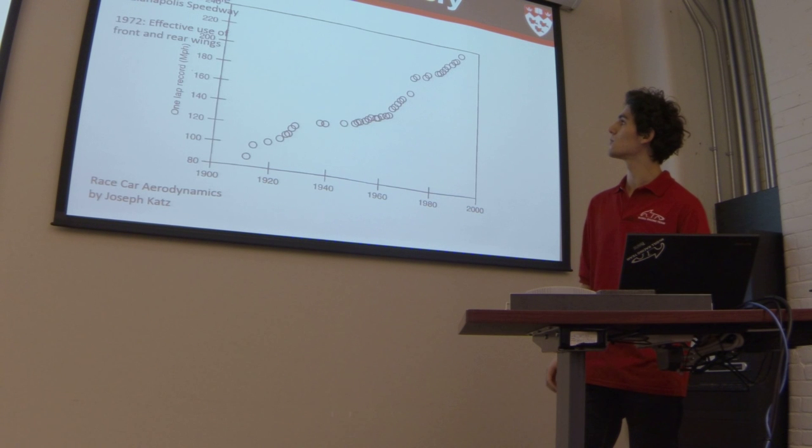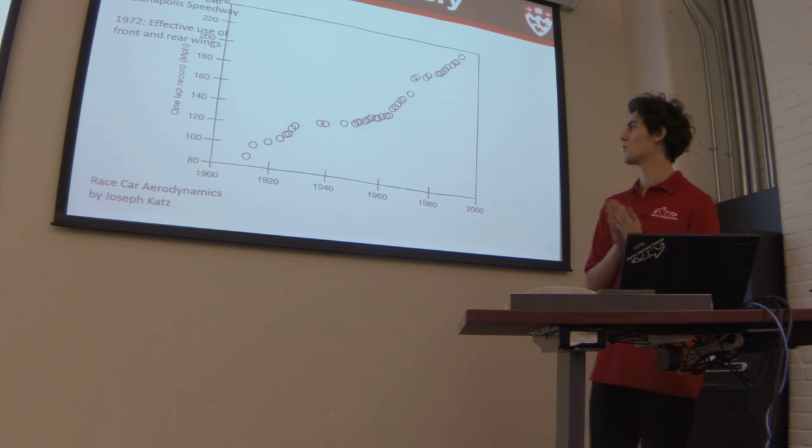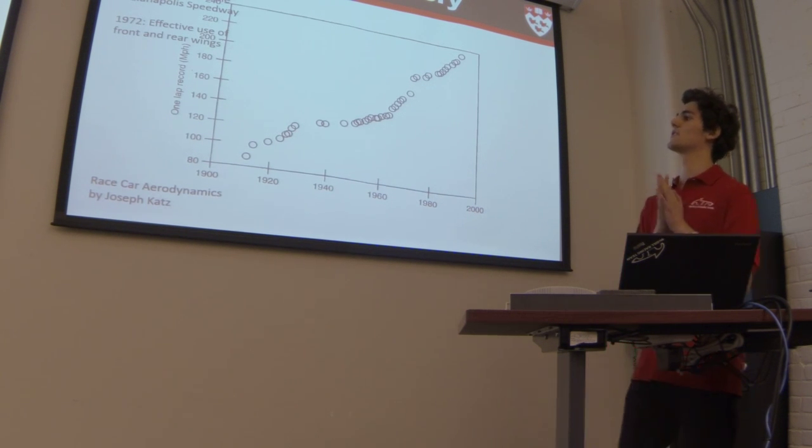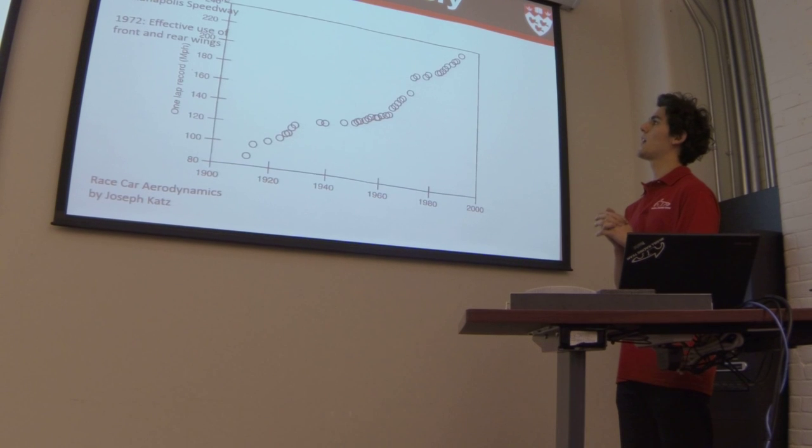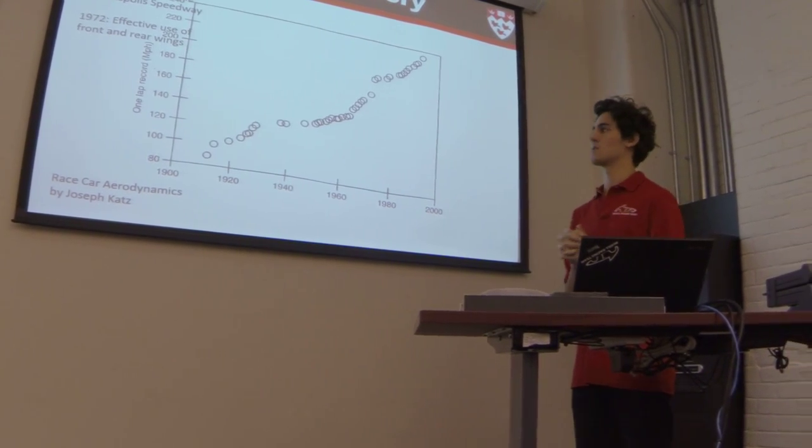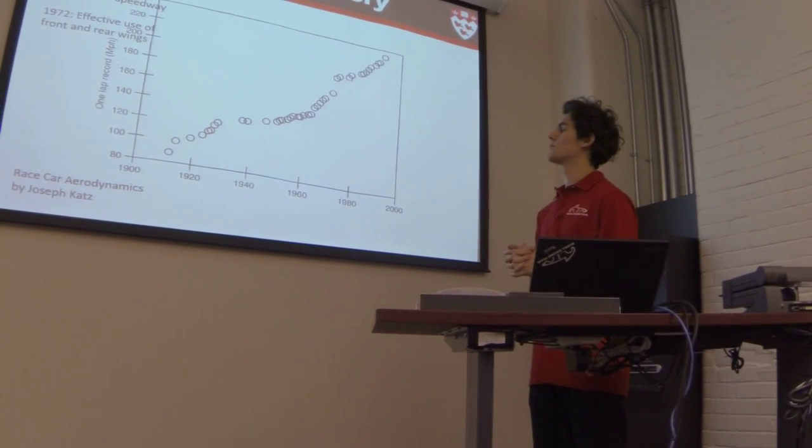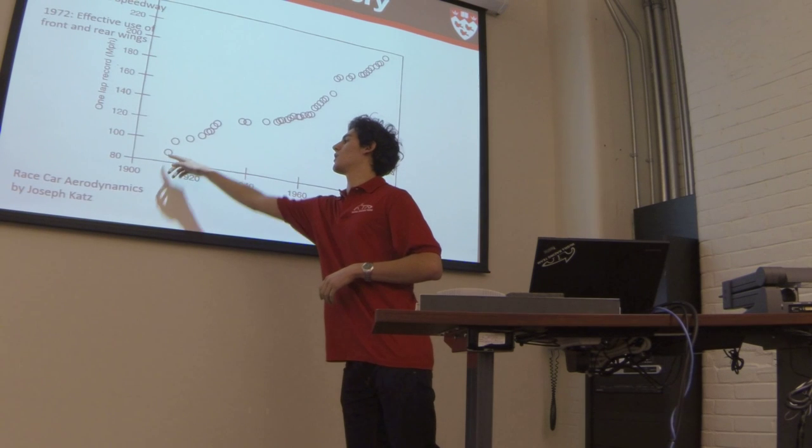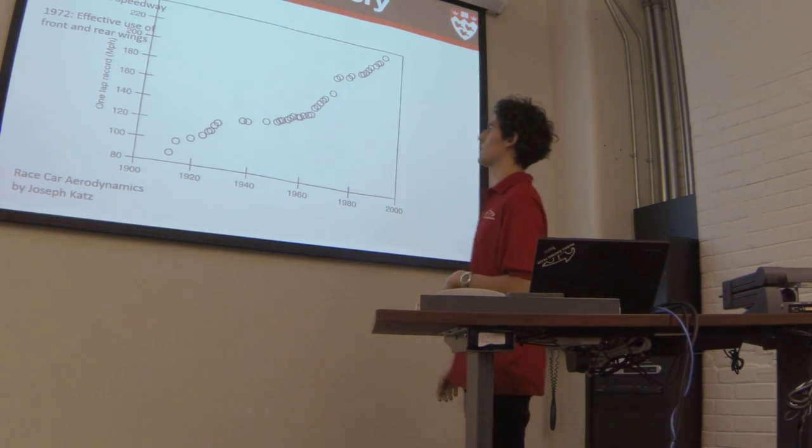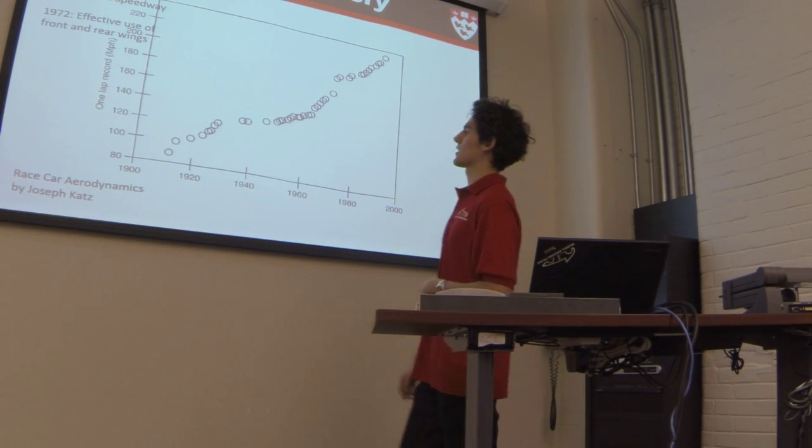So here's a cool little graph. This was taken from Race Car Dynamics by Joseph Katz. And it shows a brief history from 1910 to roughly 2000 of record one-lap speeds at the Indianapolis Speedway. So it's miles per hour on the y-axis. And you can see that from the early 1900s, it starts off at around 90 miles an hour, 85 miles an hour. And there's a positive trend. As you go through time, you're seeing cars get faster and faster. You have a nice slope here.